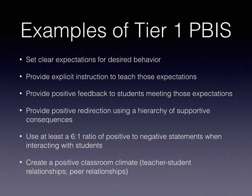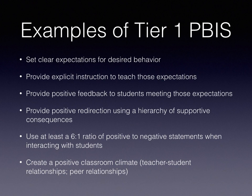PBIS is also implemented with three tiers and falls within multi-tiered systems of support. Even if a school does not have school-wide PBIS, a teacher can and should use PBIS approaches in an inclusive classroom. Examples of Tier 1 PBIS include setting clear expectations for desired behavior, providing explicit instruction to teach those expectations, and providing positive feedback to students meeting those expectations — using a ratio of at least 6-to-1 positive statements to any negative or corrective statements.